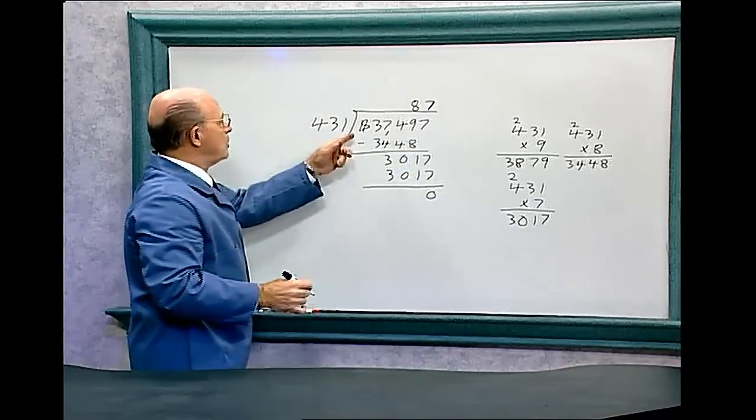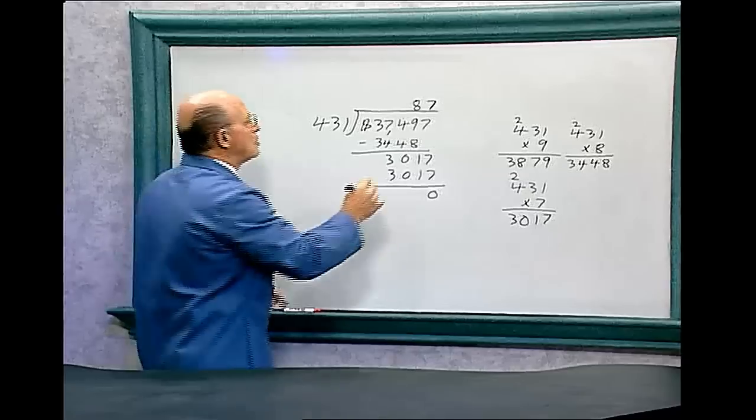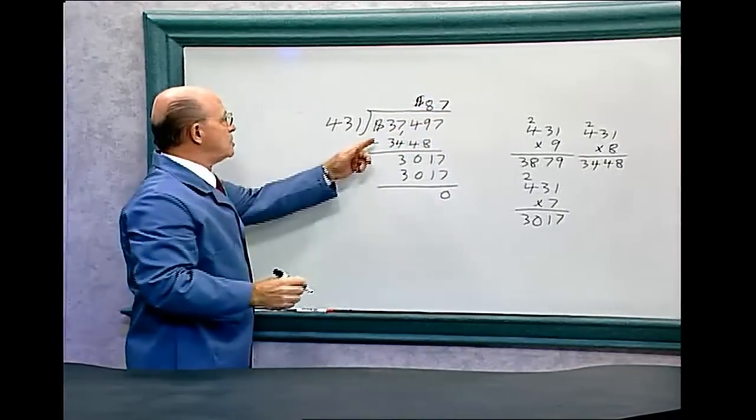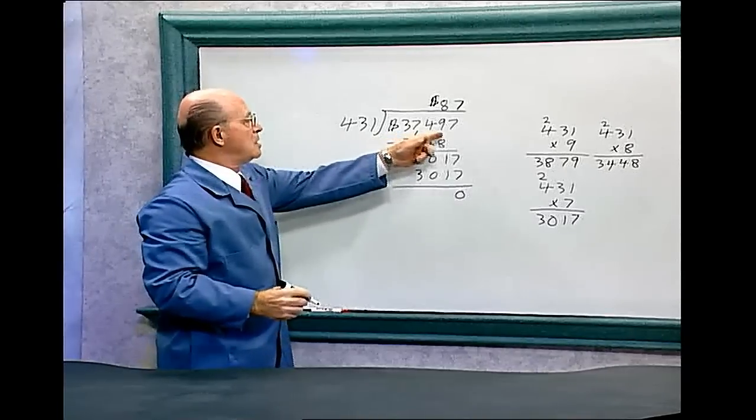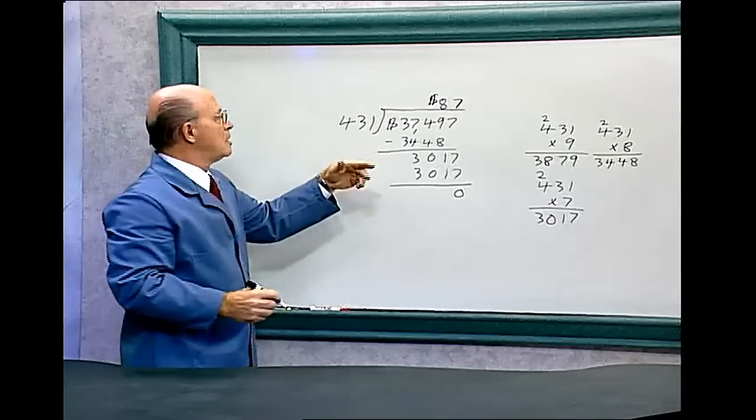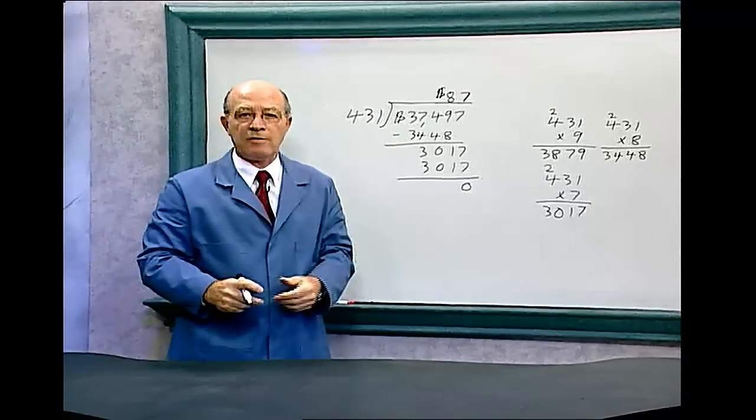And don't forget, when you have a dollar sign, to put the dollar sign in your answer. So $37,497 divided by 431 equals $87.